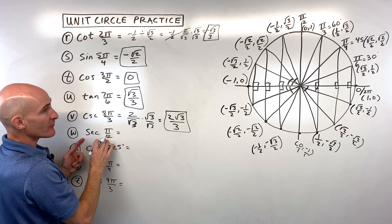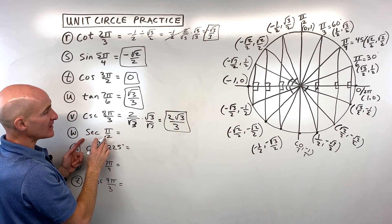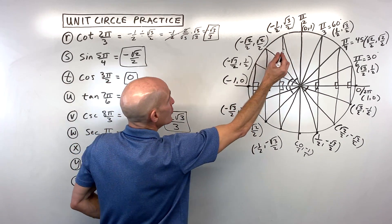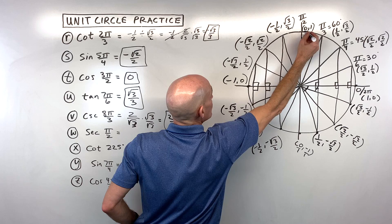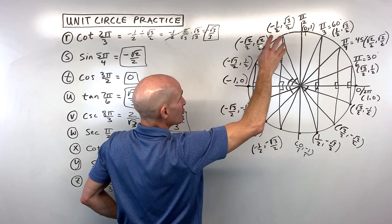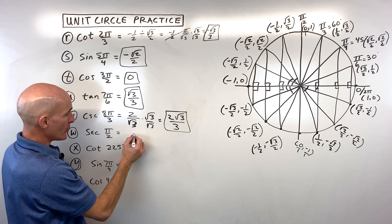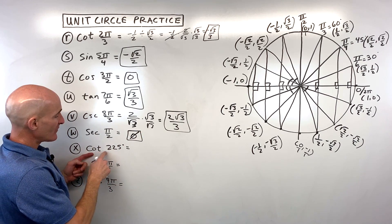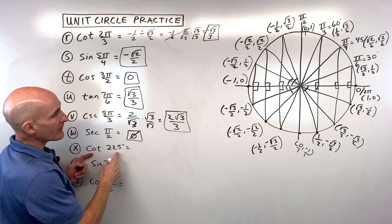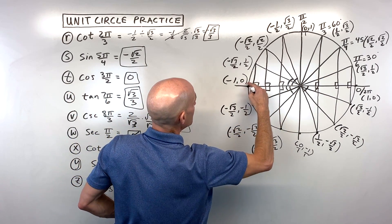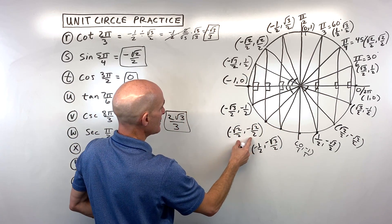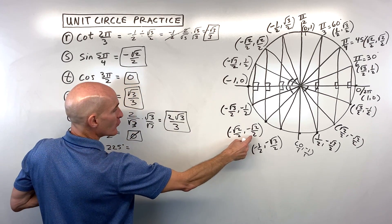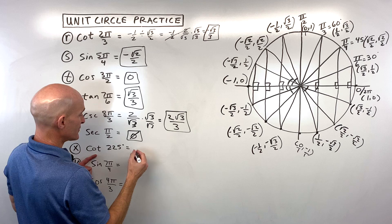Letter W: secant of π/2. π/2 is 90 degrees, landing at (0, 1). Secant is the reciprocal of cosine (x-coordinate): 1/0 is undefined. Letter X: cotangent of 225 degrees. 225 is 180 plus 45 more, landing in the third quadrant with both coordinates negative √2/2. Cotangent is x over y; anything divided by itself equals 1.